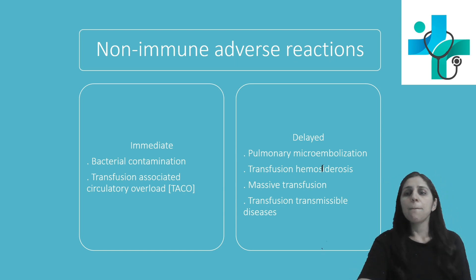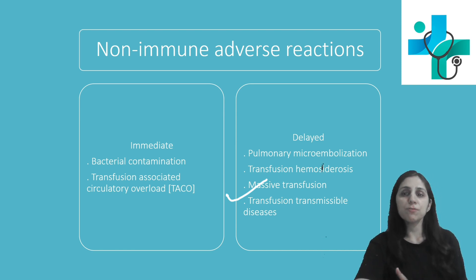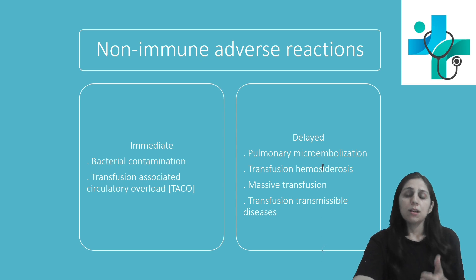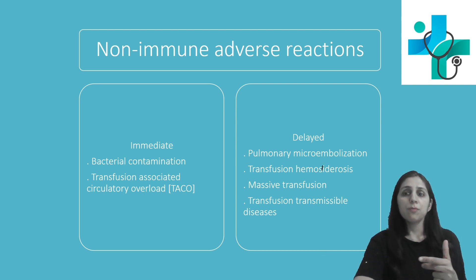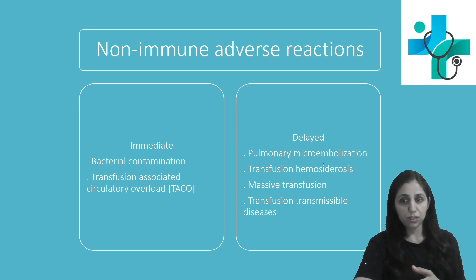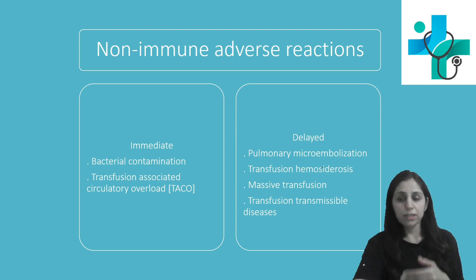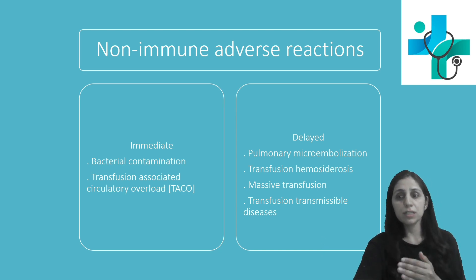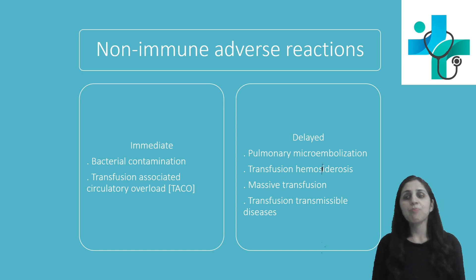The third delayed reaction is massive transfusion, which means transfusion of more than 50% of blood volume within 3 hours in an adult, or more than or equal to one time the total blood volume replaced in 24 hours. It is very dangerous and can lead to complications like metabolic alkalosis or acidosis, electrolyte imbalances such as hypokalemia or hypomagnesemia, hypocalcemia, and citrate toxicity from anticoagulants. The patient can also develop coagulopathies ultimately leading to disseminated intravascular coagulation (DIC), thrombocytopenia, or hypothermia.